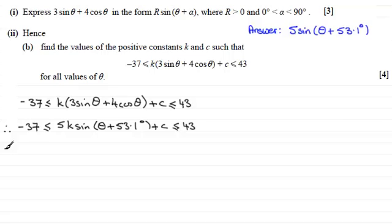Now, to find out the constants k and c, looking at this expression in the middle of this inequality, the only thing that's going to vary is this part here, the sine of theta plus 53.1 degrees. And as a function, sine can only go between minus 1 and 1. So that means that for the minimum value of this, it will be when this function here of sine is minus 1. And the maximum value will be attained when this is 1.